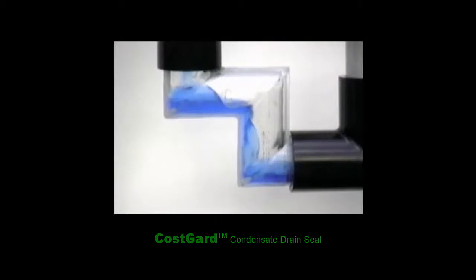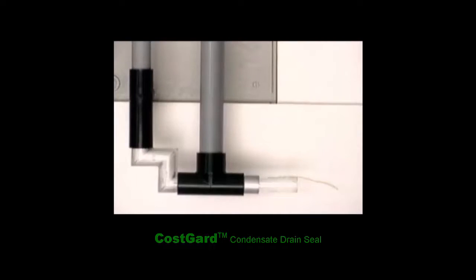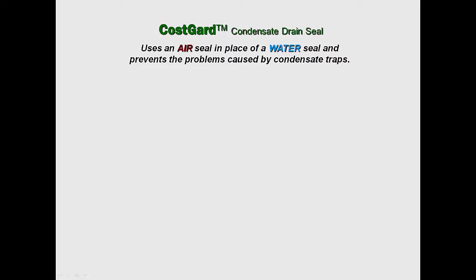Unlike the condensate trap, the CostGuard condensate drain seal retains no condensate. Once condensate flow ceases, the warmer air that forms the drain seal quickly evaporates any water that may be held in place by surface tension. A key feature of the CostGuard condensate drain seal is that it uses an air seal in place of a water seal and therefore prevents the problems caused by condensate traps.